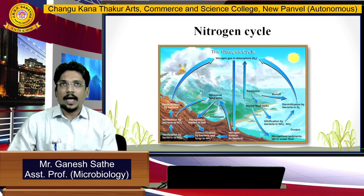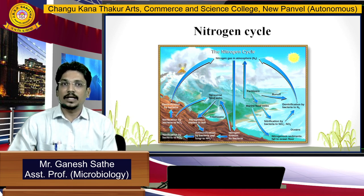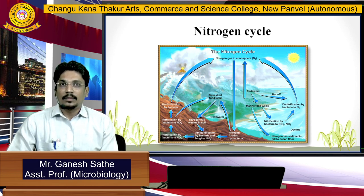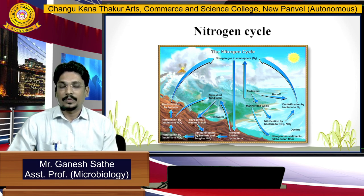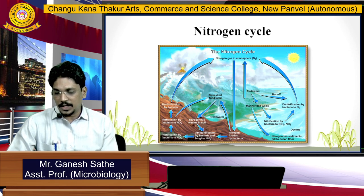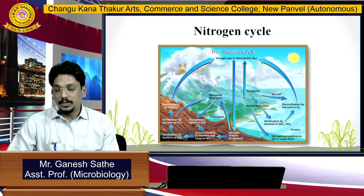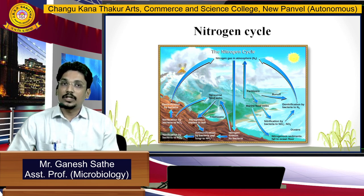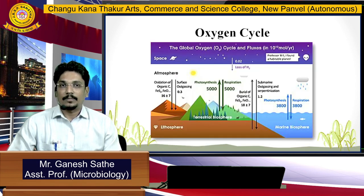The next cycle is the nitrogen cycle. Air has 79 percent nitrogen, which is in a very inert form. Nitrogen will be fixed using three different methods: through lightning, through chemical processes, or through biological processes. Due to denitrification done by bacteria, nitrogen gets released. Due to ammonification and nitrogen fixation, there is an exchange of nitrogen in the nitrogen cycle.